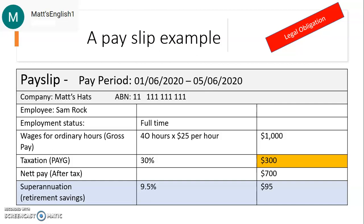In Australia, you can be paid weekly, fortnightly — that means every two weeks — or monthly.